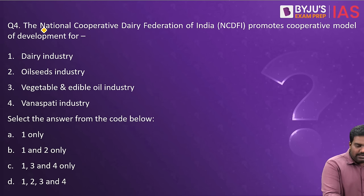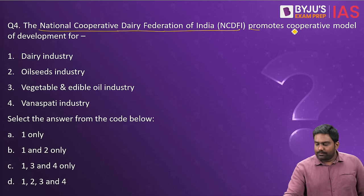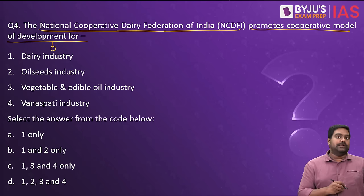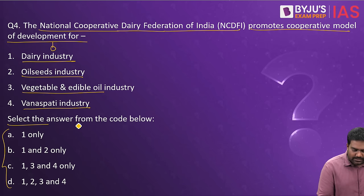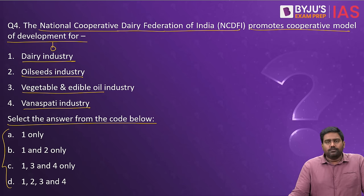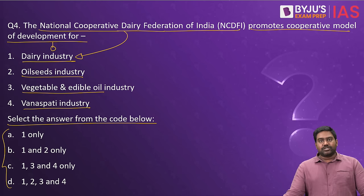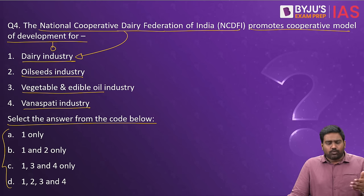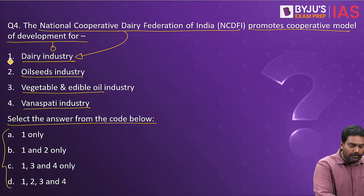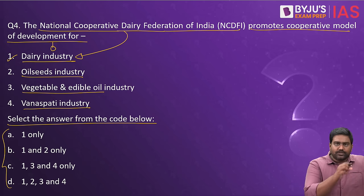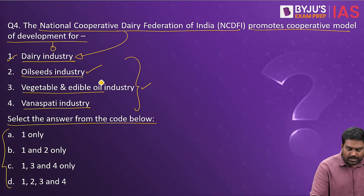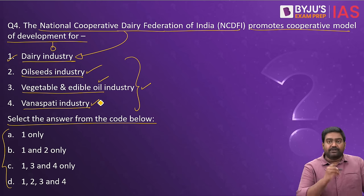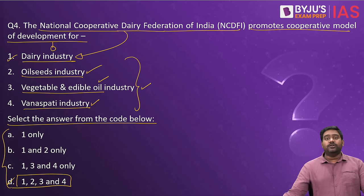Question number four: The National Cooperative Dairy Federation of India promotes the cooperative model for which industry? Is it for the dairy industry, oil seeds, vegetable and edible oil, or vanaspati? Most of you might think that since it is named the National Cooperative Dairy Federation, it would obviously deal with the promotion of the dairy industry alone. But that is incorrect. Along with promoting the dairy industry, it also promotes all the other industries mentioned — oil seeds, vegetable and edible oil, and even vanaspati. The correct answer is option D: one, two, three, and four.